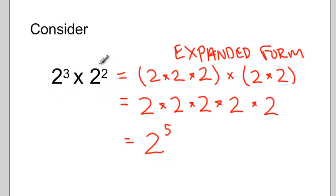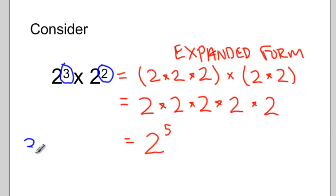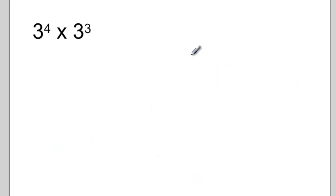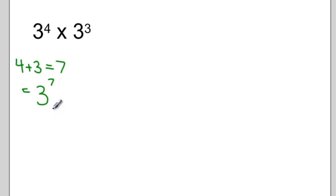Is there a relationship between the original question and the final answer? Is there a shortcut that would let us go from the original question to the final answer in one step? Notice how if we look at just the exponents and add them together — 3 plus 2 — we get 5, which is the same as the exponent in our final answer. So we think that 3 to the exponent 4 times 3 to the exponent 3 equals 3 to the exponent 7, by adding the exponents to get 7.